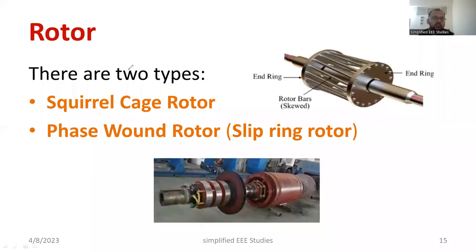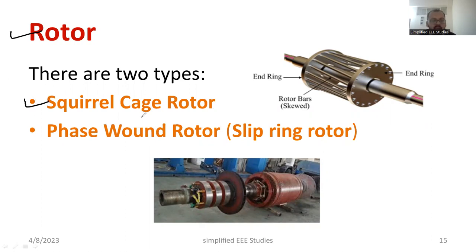Now I would like to discuss the rotor. The rotor is the moving part. Based on the rotor construction, there are two types of induction motors: one is the squirrel cage rotor and the other is called the wound rotor, also known as the slip ring type rotor.